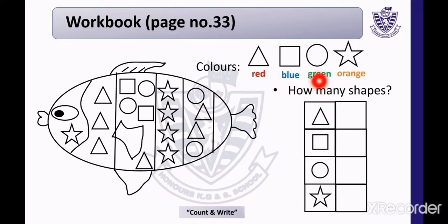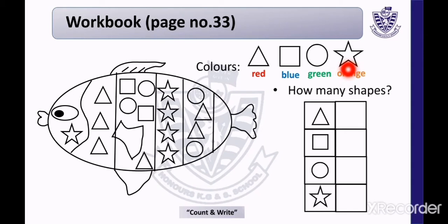The next shape is a circle. This is a circle, and we will color the circle with green color. And the last shape is a star. We will color the star with orange color.